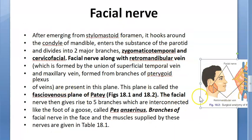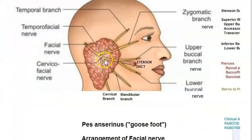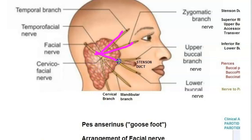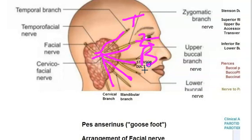The most important structure is the facial nerve, which passes within the parotid gland. The facial nerve has five terminal branches — shown here with dotted lines since they run within the gland. These five branches are remembered using the mnemonic 'Ten Zebra Bit My Cat': Temporal, Zygomatic, Buccal, Mandibular, Cervical.